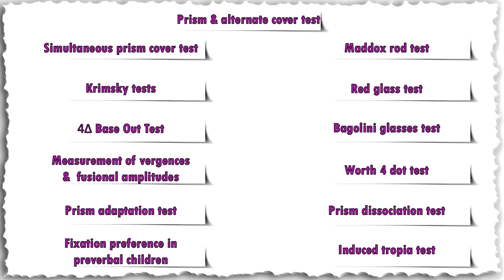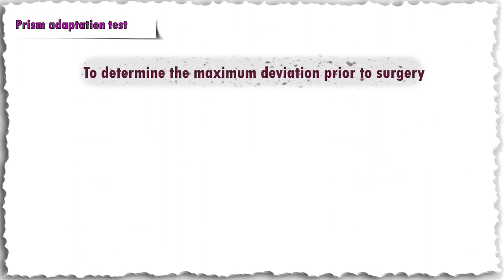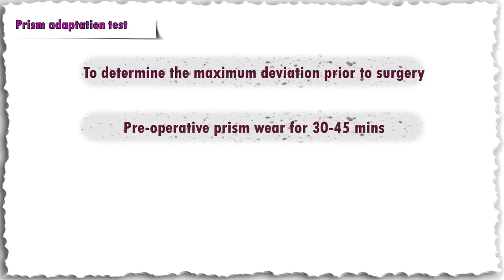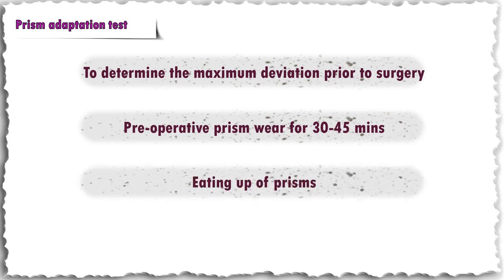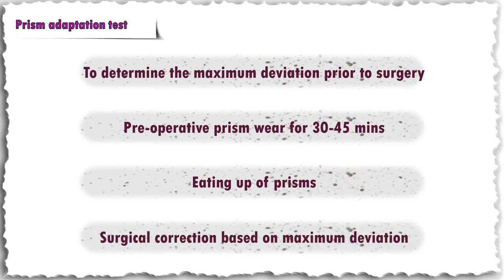I shall discuss the prism adaptation test alone. Some surgeons use the prism adaptation test to determine the maximum deviation prior to surgery in common comitant deviations. In some persons, a pre-operative prism wear of 30 to 45 minutes may result in an increase in the deviation — this is called 'eating up' of prisms. An increase in prism power is required to determine the maximum deviation in such cases, as surgical correction has to be based on the maximum deviation to avoid under-correction.